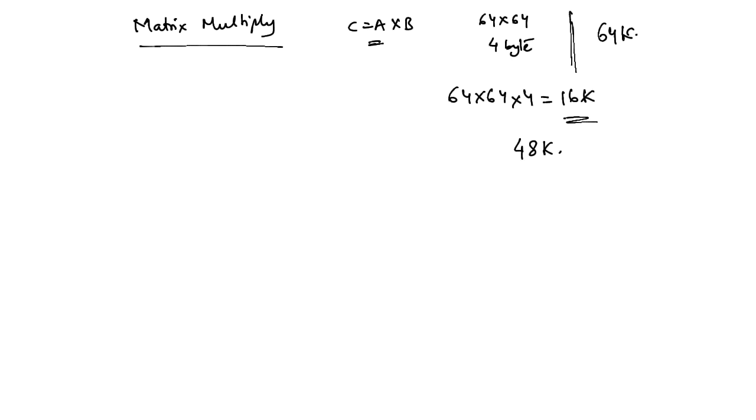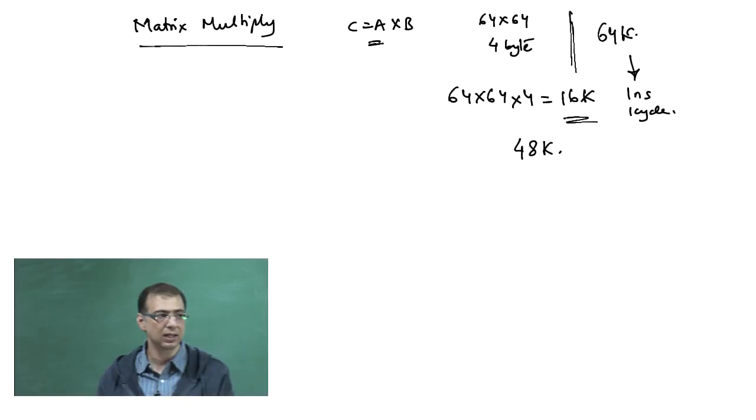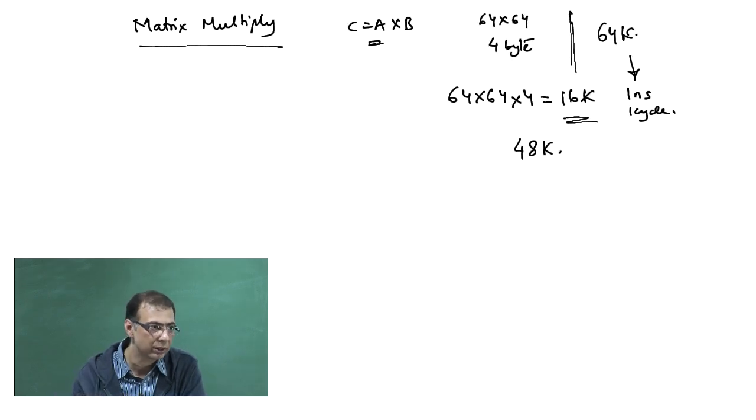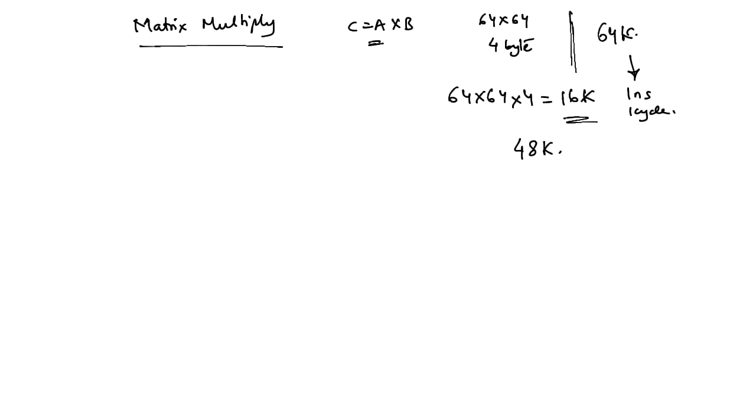So how would my matrix multiply perform now? Let us assume that the cache gives me a latency of 1 nanosecond or 1 cycle and the main memory as before is giving me a latency of 100 cycles or 100 nanoseconds. So now what happens is that first time that I access an element, it is going to have to go to the memory and get it, which is going to take 100 cycles or 100 nanoseconds. But every subsequent time that I access the data, it is going to come from the cache. Let me just simplify it, let us just say that I just load all the data into the cache first, although that is not the way you do it, but let me just assume that just to do a simple analysis.